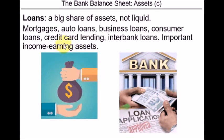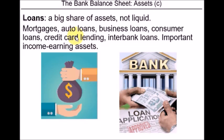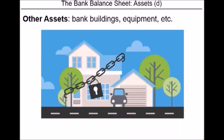A very important type of asset for a bank is of course loans. Loans are usually a large share of assets and are not a very liquid asset, as it takes a long time for the bank to have a loan repaid in full. There are different types of loans: mortgages for borrowers who want to buy a house, auto loans, business loans, consumer loans, credit card loans, interbank loans, and so on. Loans are usually the main income-earning asset for a bank.